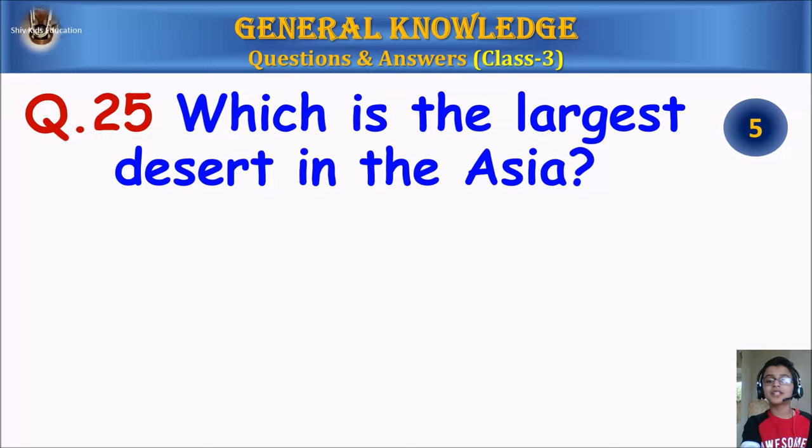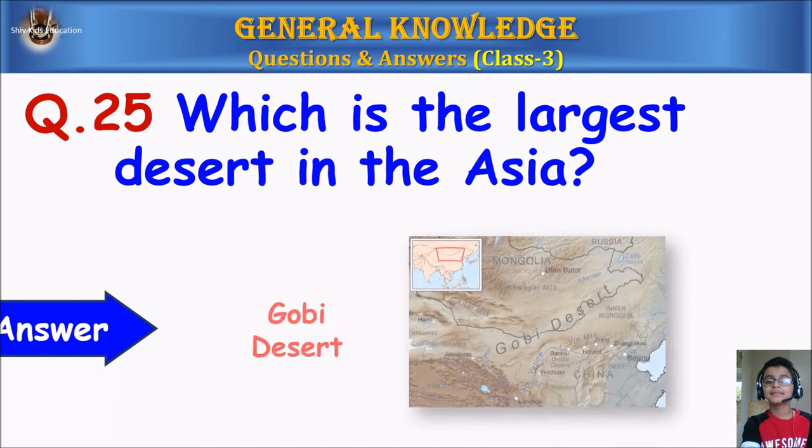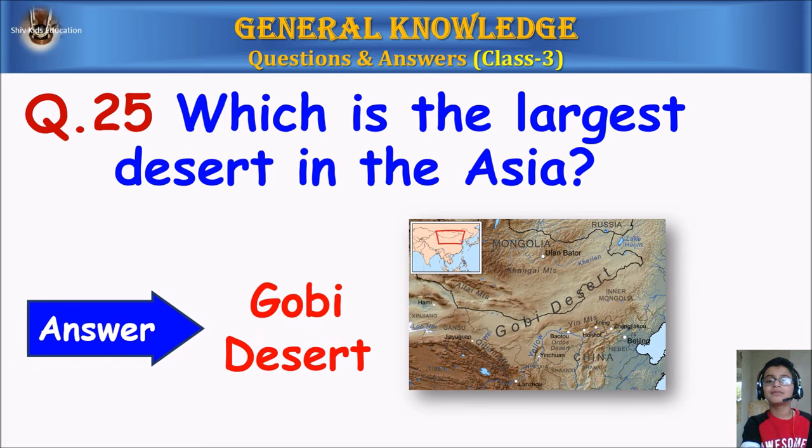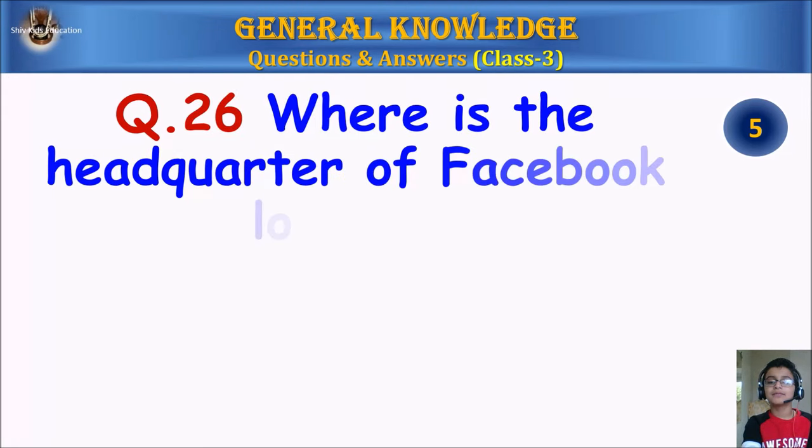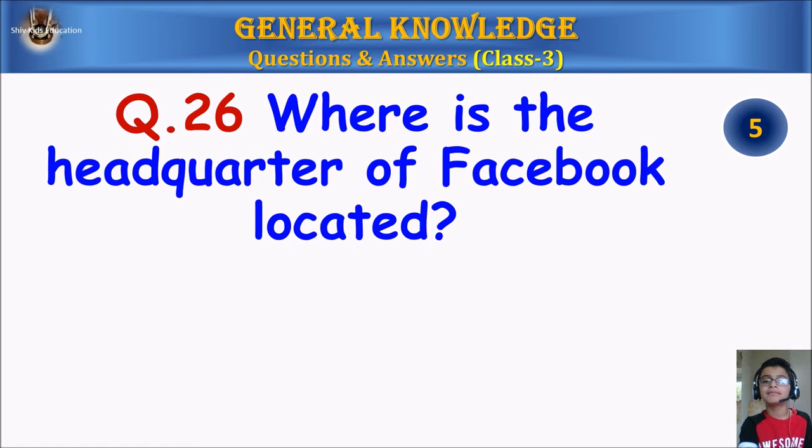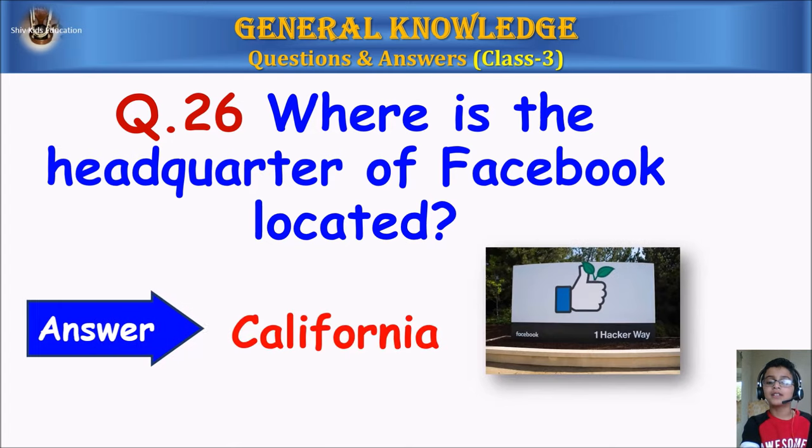Question 25: Which is the largest desert in Asia? Your time starts. Answer: Gobi Desert. Question 26: Where is the headquarter of Facebook located? Your time starts. Answer: California.